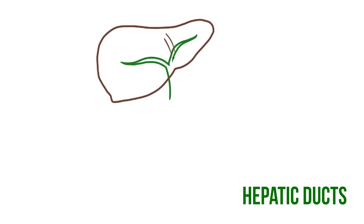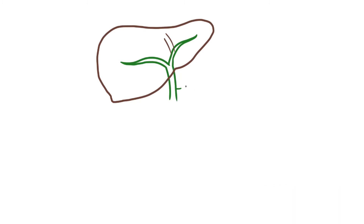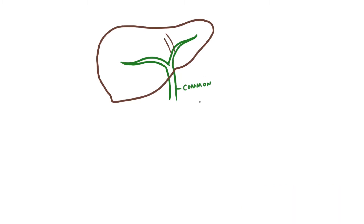Bile from the liver is collected in small ducts known as the bile canaliculi. These come together to form left and right hepatic ducts in each half of the liver, before uniting and leaving the liver as the common hepatic duct.